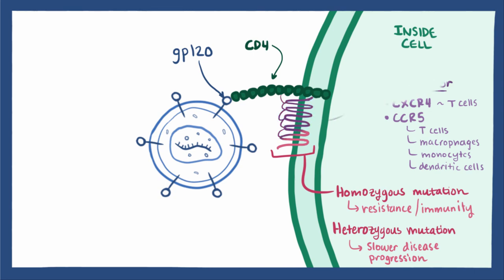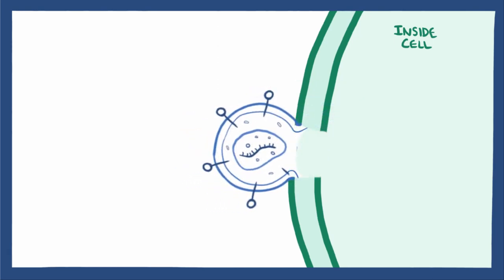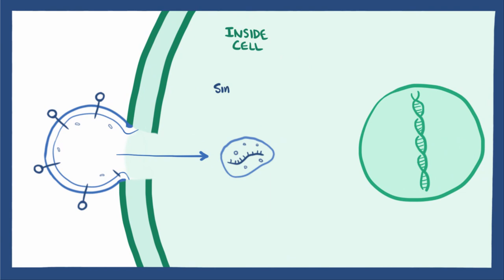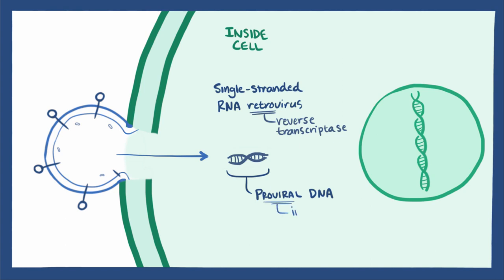For those without this mutation, once HIV binds to CD4 and either CCR5 or CXCR4, it gains access into the cell. HIV is a single-stranded, positive-sense, enveloped RNA retrovirus, meaning it injects its single strand of RNA into the T helper cell. It uses an enzyme called reverse transcriptase to transcribe a complementary double-stranded piece of proviral DNA. Proviral means it's ready to be integrated into the host's DNA, so it enters the T helper cell's nucleus and inserts itself into the cell's DNA, ready to be transcribed into new viruses.